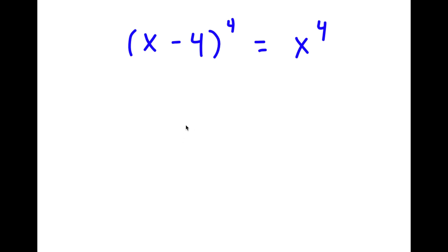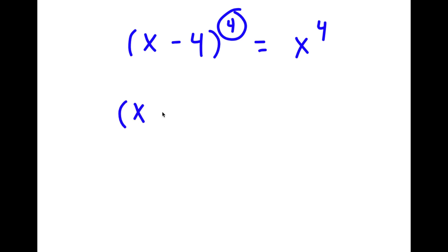In this problem, I have (x minus 4) to the power of 4 is equal to x to the power of 4. To solve this, I'm going to first rewrite 4 here as 2 times 2. So now I have (x minus 4) to the power of 2 times 2 is equal to x to the power of 4.